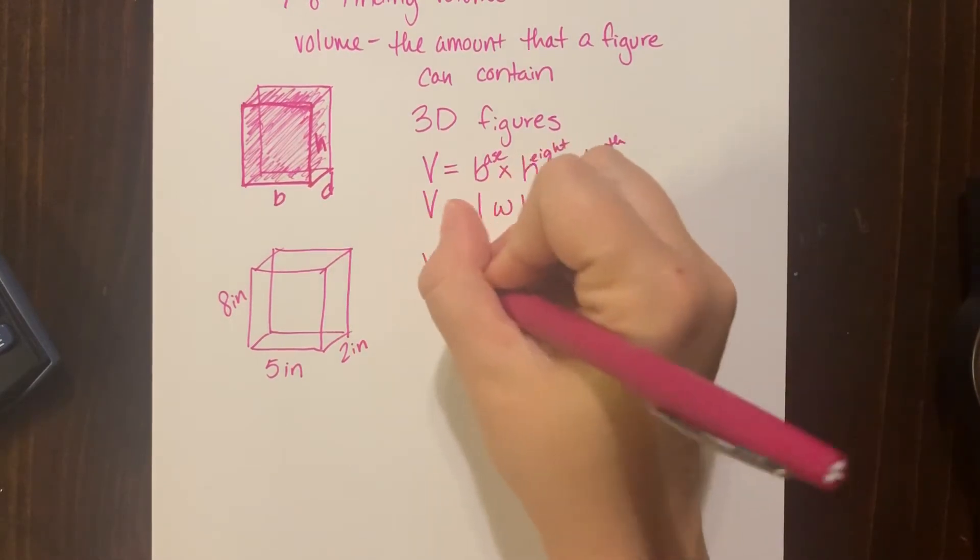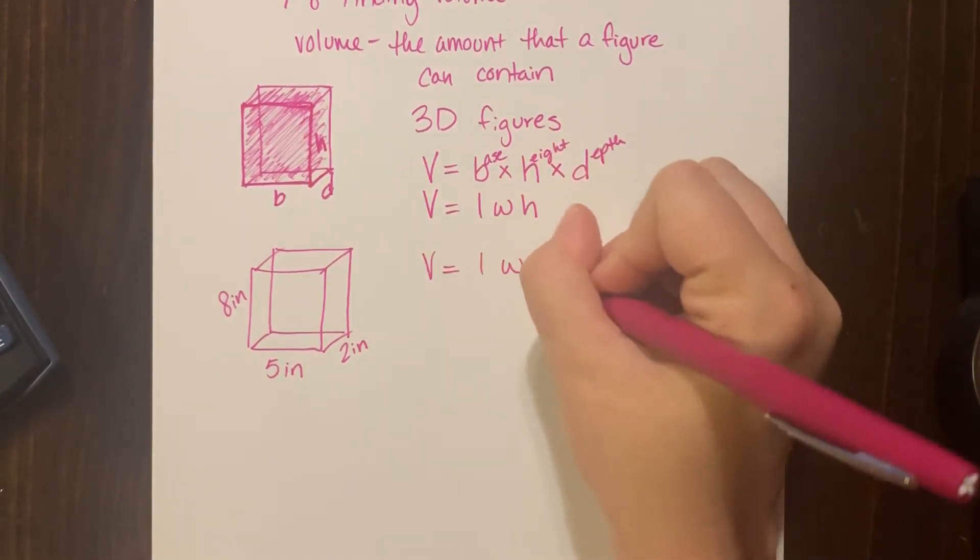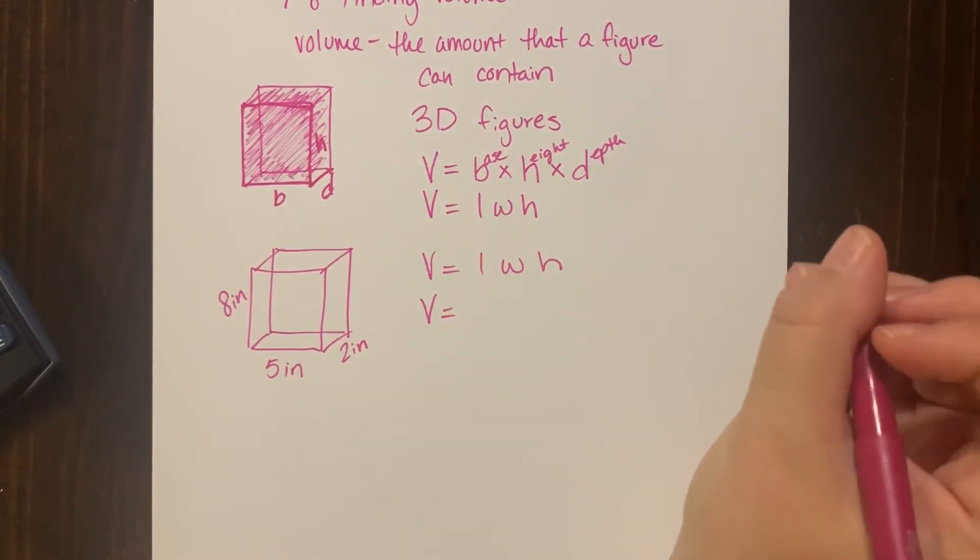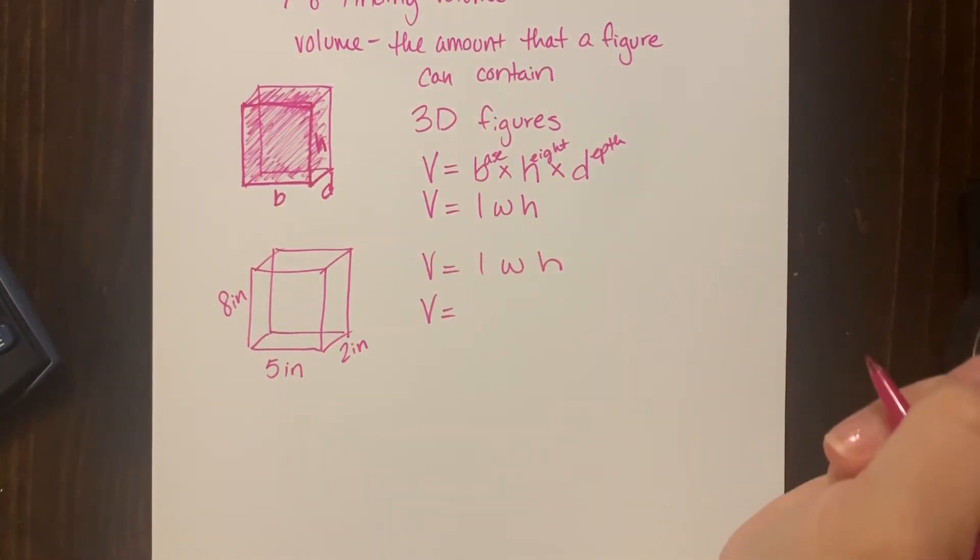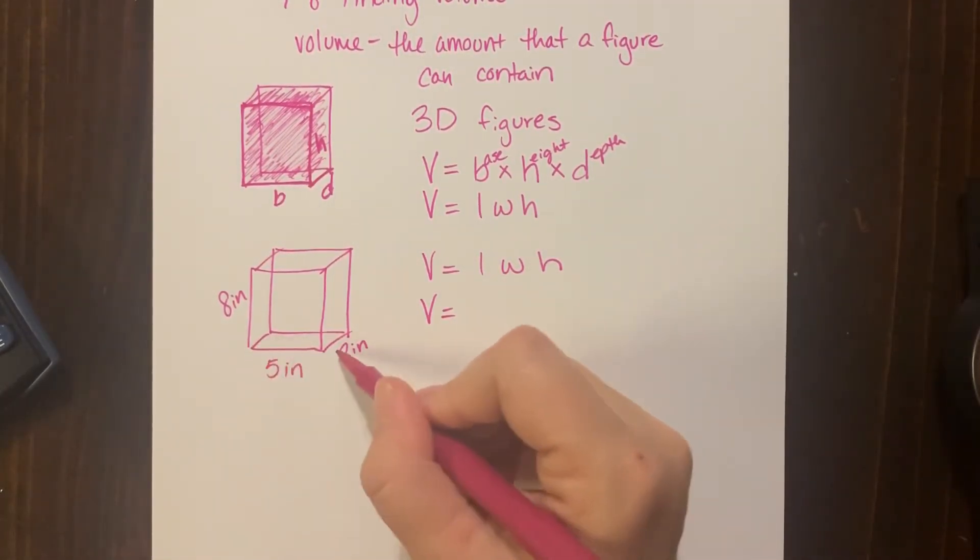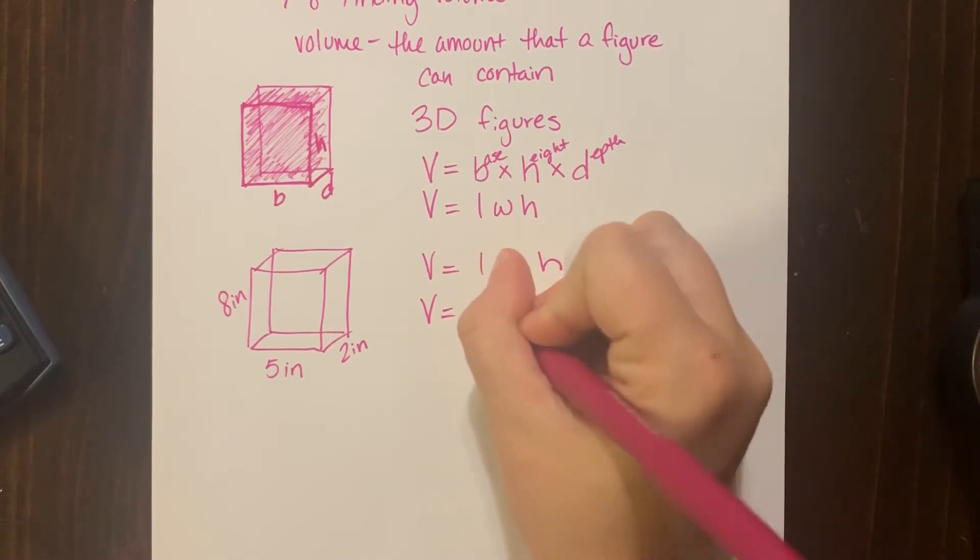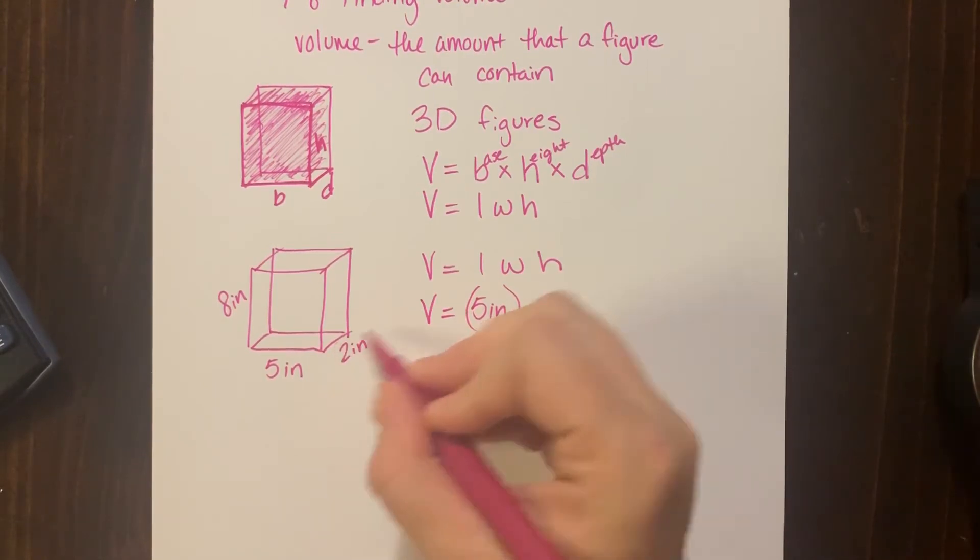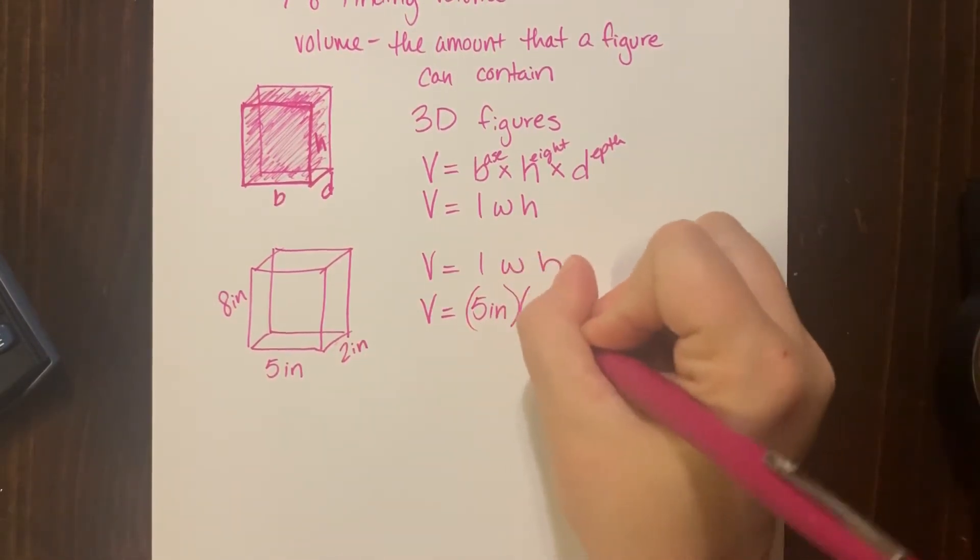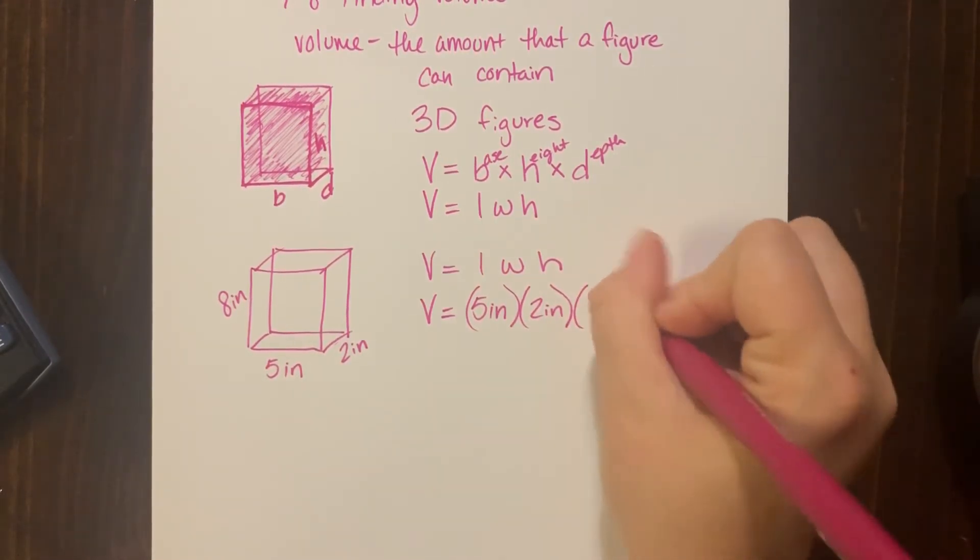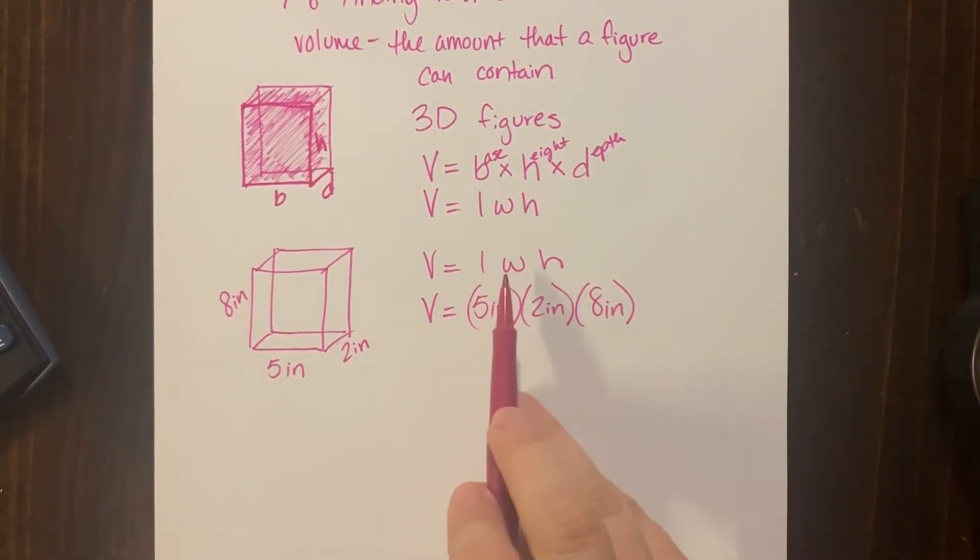So if I want to know how much cereal this box can hold, I'm going to take length, width, and height. I'm going to use parentheses just because those are my favorite multiplication tool. So I have the length of the front of the box, which is five inches, times the width of the box, and times the height of the box.